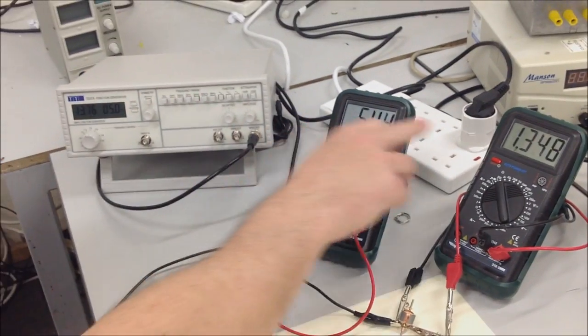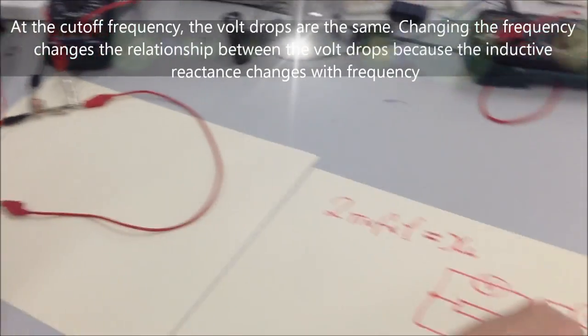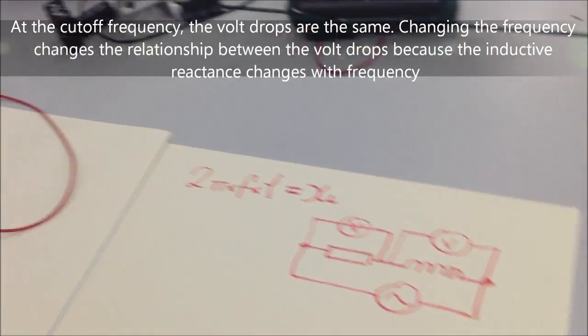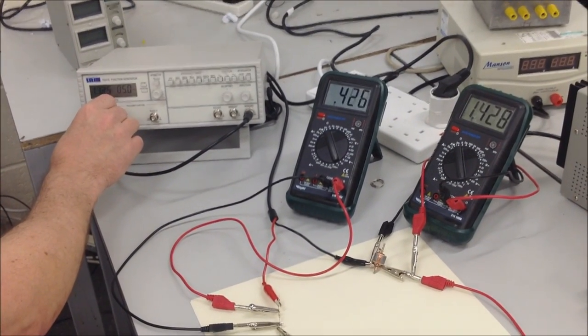If we increase the frequency, we see that the volt drops change, so the volt drop becomes larger across one component than the other. But at the cutoff frequency the voltages are exactly the same.